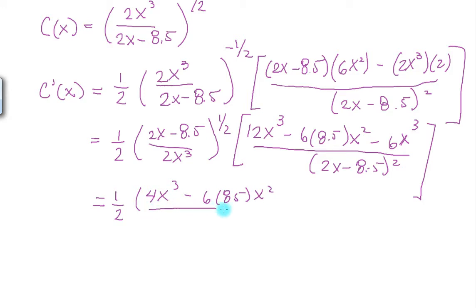Divided by, like I said, 2X minus 8.5 to the 3 halves. And we still have this term left, which we can just leave as 2X cubed, square root of that.